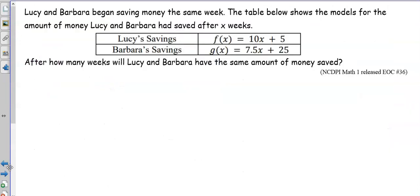Let's look at another example. Lucy and Barbara began saving money the same week. The table below shows the models for the amount of money Lucy and Barbara had saved after X weeks. Lucy's savings is F of X equals 10X plus 5. And then Barbara's savings is 7.5 times X plus 25. After how many weeks will Lucy and Barbara have the same amount of money saved?